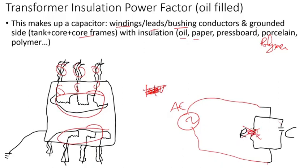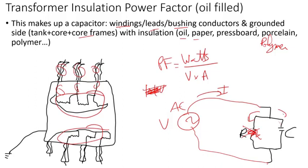If there is contamination or moisture, this resistance will consume some watts in the form of losses. Going back to the definition of power factor — watts divided by the voltage applied and current measured — some current will go through the resistive path and some through the capacitor. The worse the imperfection of the insulation, the higher the watts, meaning the power factor gets larger. We want the power factor to be as small as possible — typically less than 0.5% for power transformers.